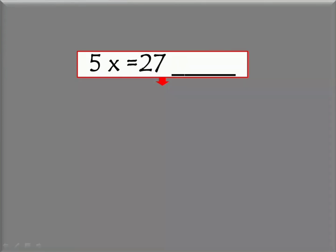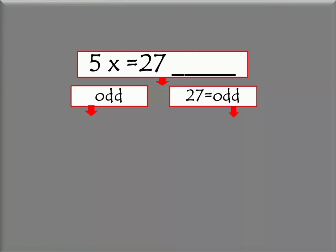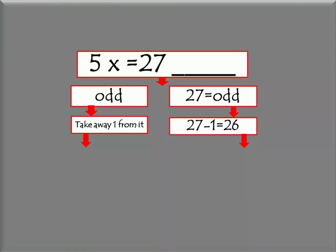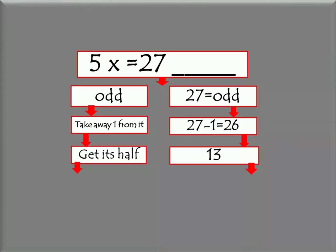Let's try to get the product of 5 and 27. As we all know, 27 is an odd number. With this, we need to take away 1 from it: 27 minus 1 equals 26. Second step: get half of 26 — we have 13. Lastly, since 27 is an odd number, we affix 5 at the ones place.